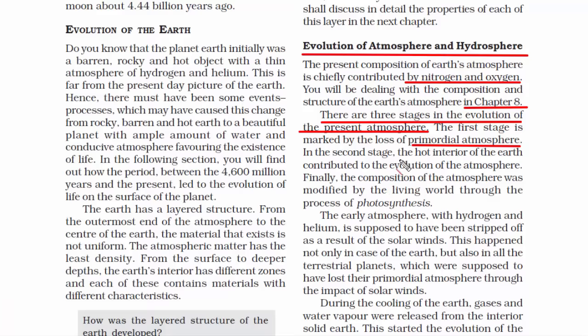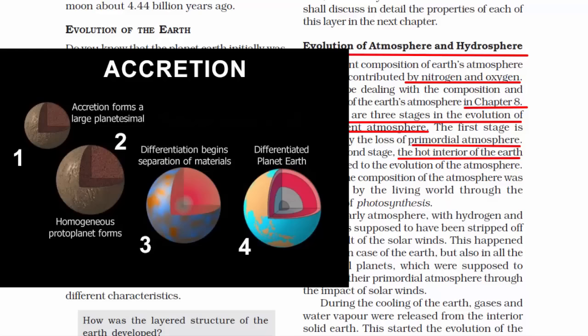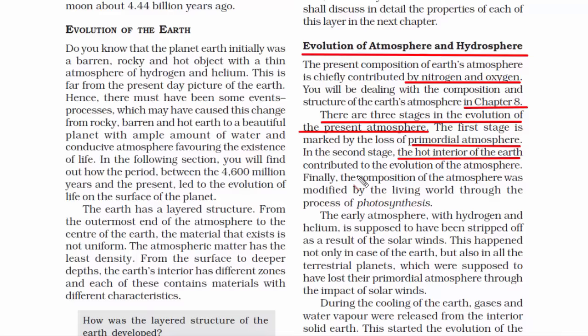In the second stage, the Earth was a very volatile object with constant change and extremely high temperatures inside. When an object is super hot it will emit heat, also called thermal radiation. These thermal radiations contributed to the evolution of the atmosphere. Every single aspect together contributed toward the present atmosphere.